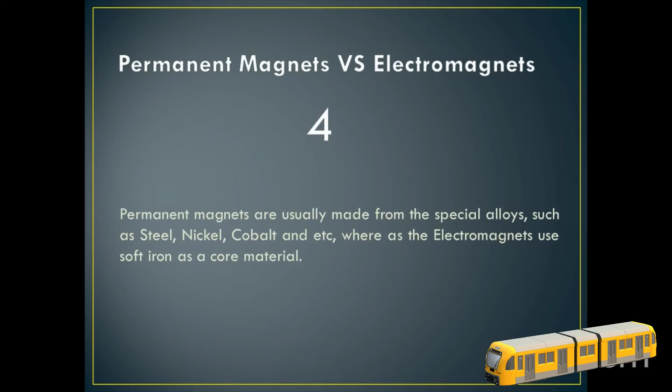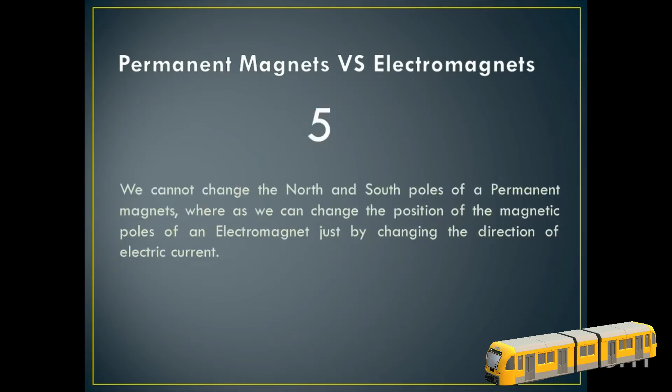And the last one is number five: we cannot change the north and the south poles of a permanent magnet because they are fixed, whereas with the electromagnet we can also change the direction and position of their poles.